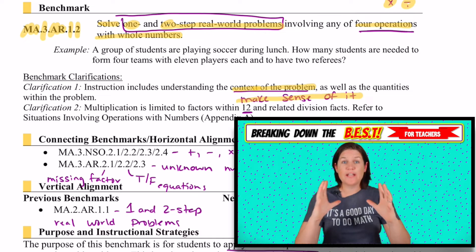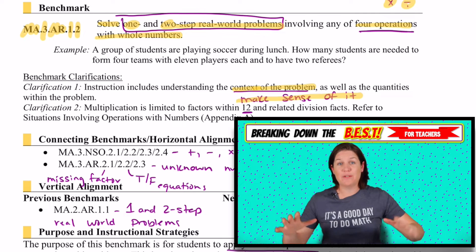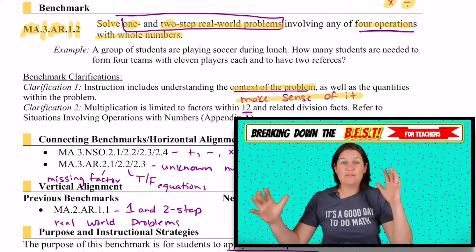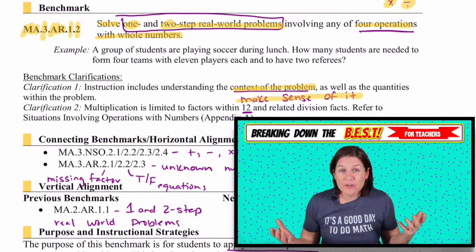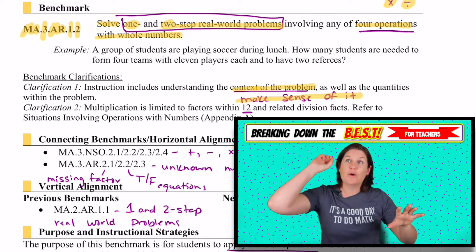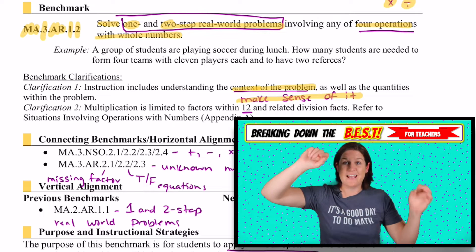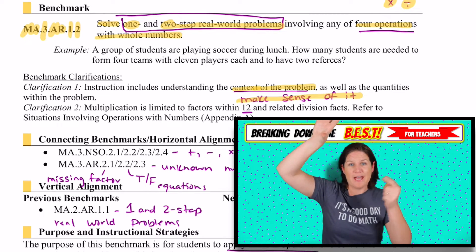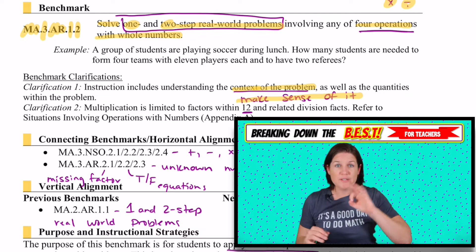If it's addition, it means that we're joining parts together. If it's subtraction, it could be one of three scenarios: we know the total and we're separating a piece; we have values that we're comparing, like finding the difference or finding how many more; or we know part and the whole — like I have $5 but I want to buy a toy that costs $20, how many more dollars do I need? So those are three scenarios for subtraction.